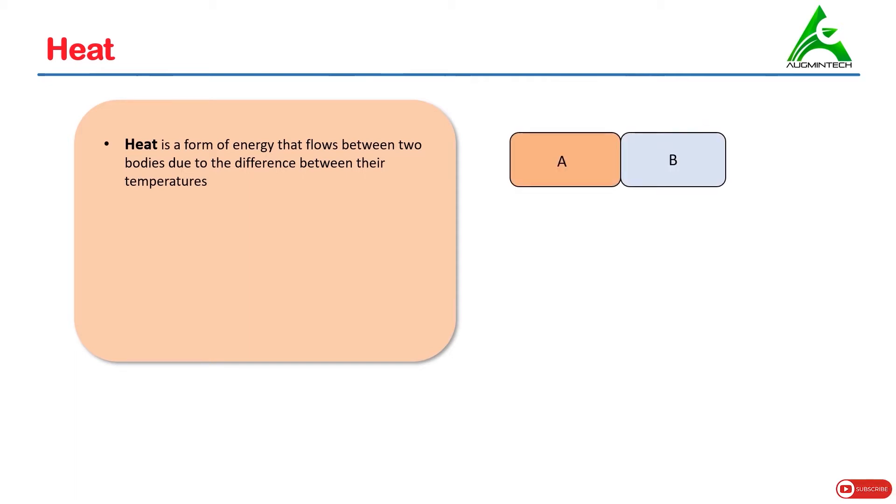Let's say there are two bodies A and B at different temperatures. Due to the difference in their temperature, heat flows from a body at higher temperature to a body at lower temperature.